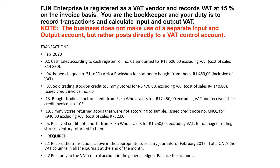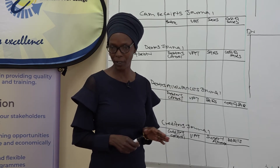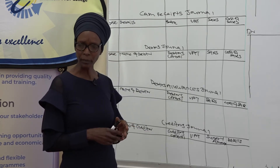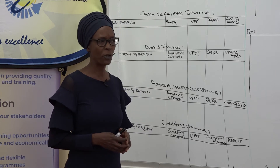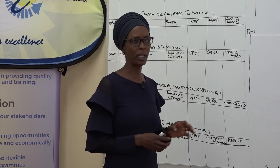I have started an exercise from one of our previous question papers so that we can see how to record transactions to the subsidiary journals. FJN Enterprise is registered as a VAT vendor and records VAT at 15% on the invoice basis. You are the bookkeeper and your duty is to record transactions and calculate the input and output VAT. The business does not use separate input and output accounts but posts directly to the VAT control account. You must firstly read the instructions to find out how many percent the VAT is.